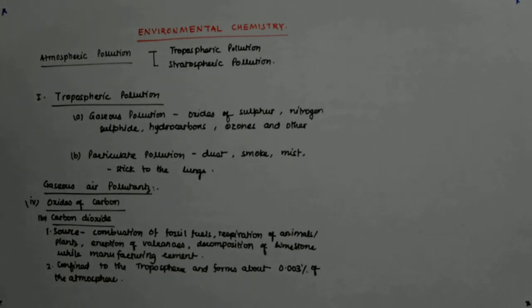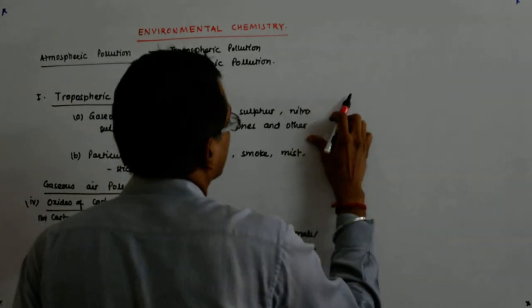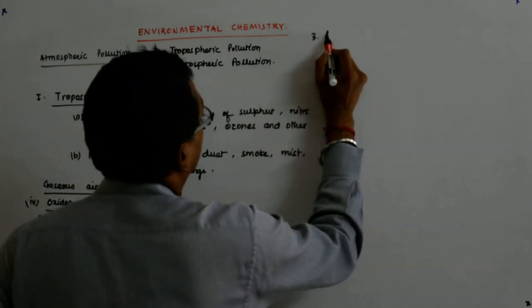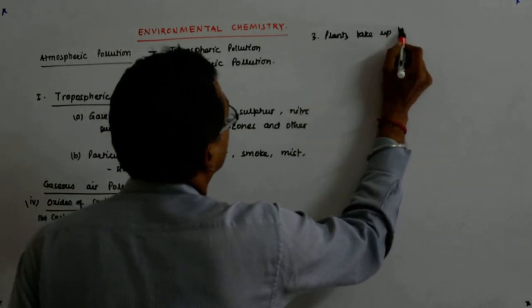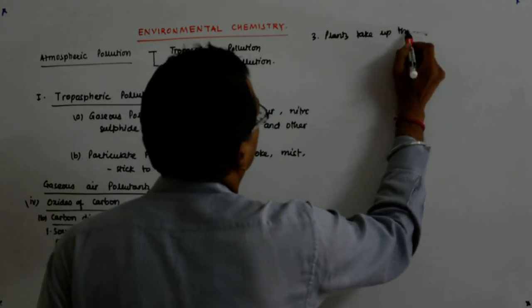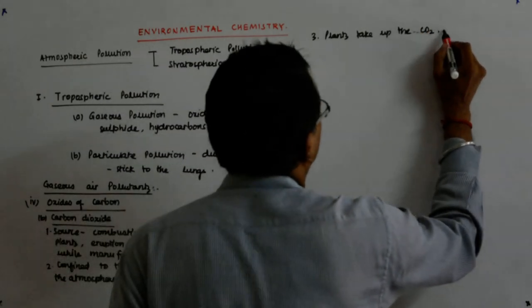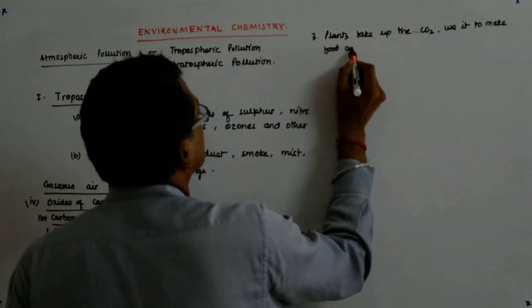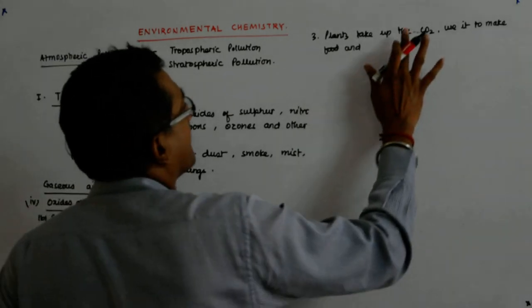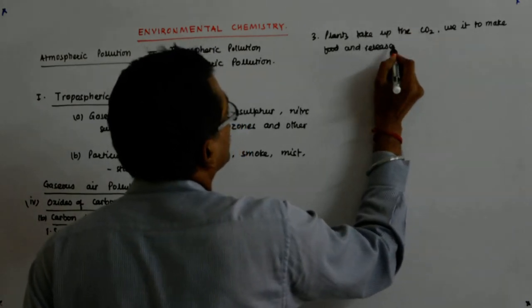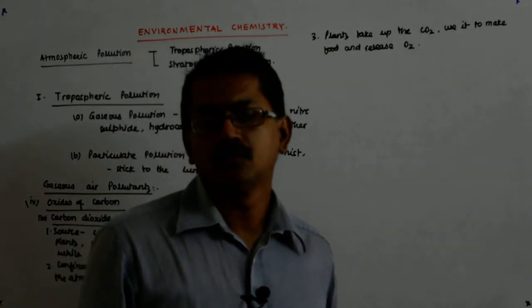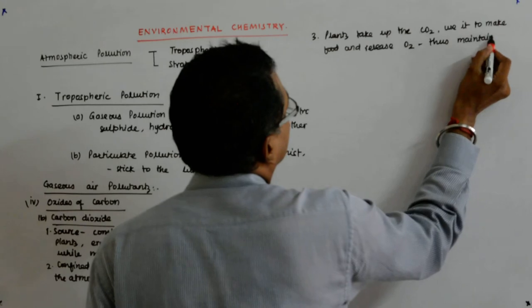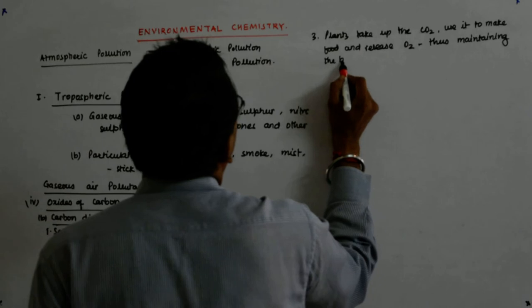Now, fortunately, there is a symbiotic relation between us, the pollution mongers, and the plants. Plants are the sink houses, the lungs. Plants take up the CO2, use it to make food, and release the O2. That's how basically the balance is maintained.